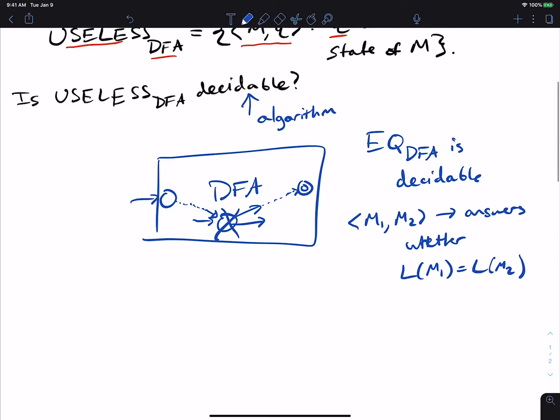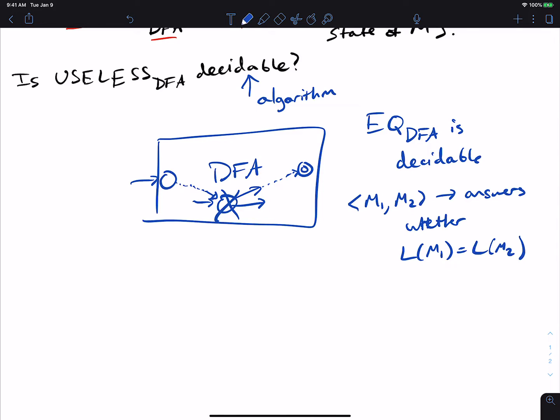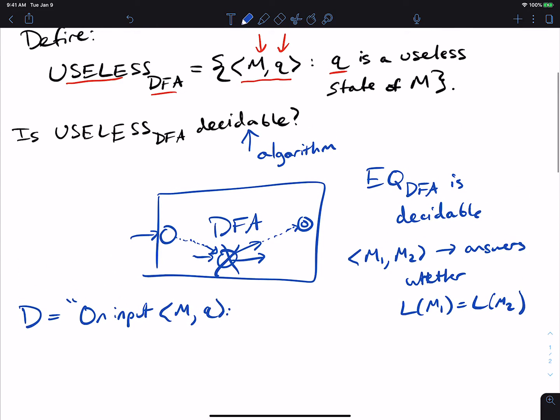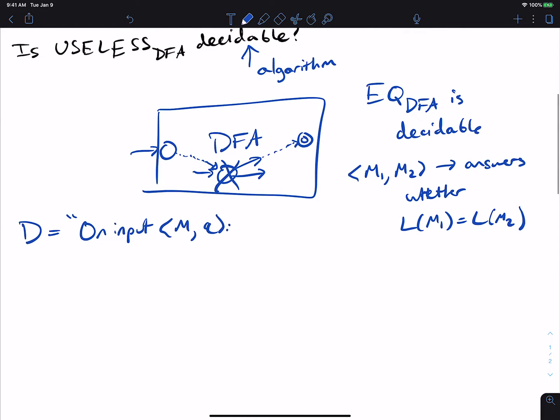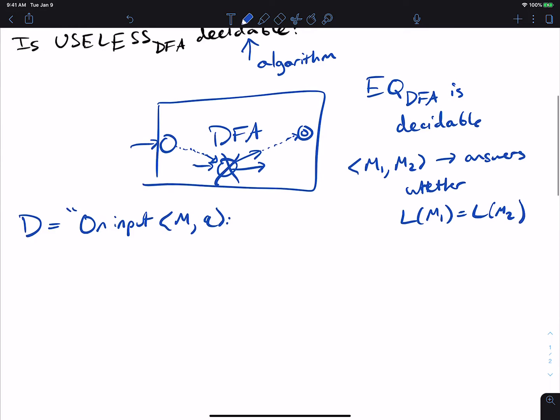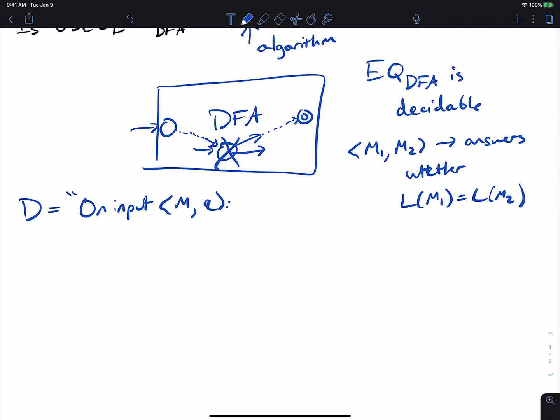So how can we use this? Let's build the decider for USELESS_DFA based on the decider for EQ_DFA. I'm going to call the decider D. On input M and q, because we're trying to answer the question for USELESS_DFA, we have to present this machine and the state itself. We want to answer yes or no, whether or not q is a useless state.